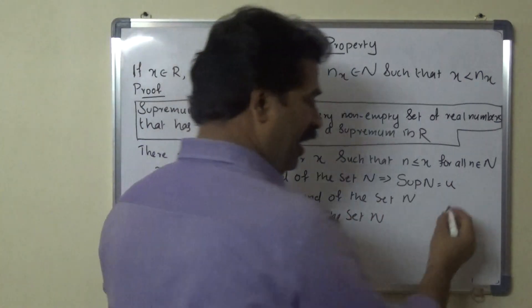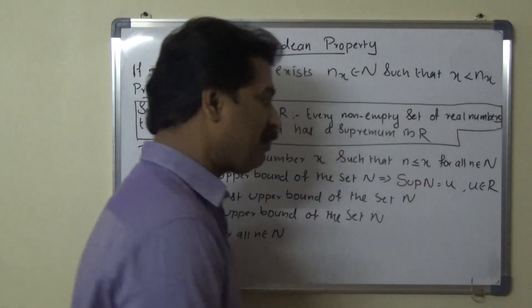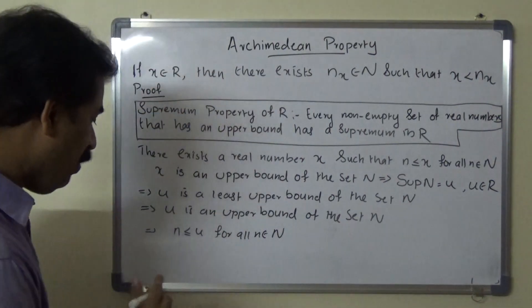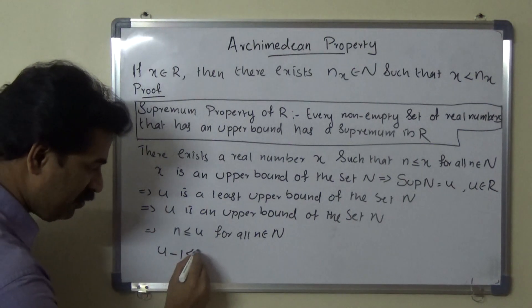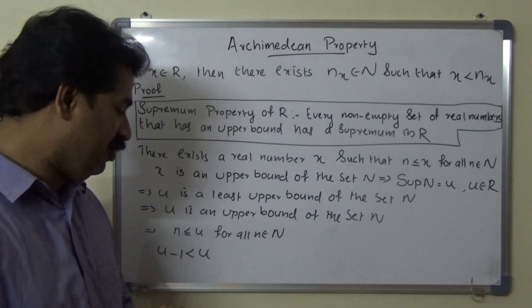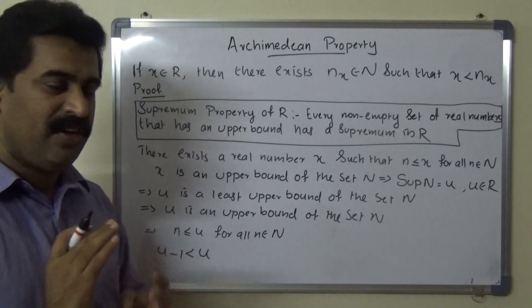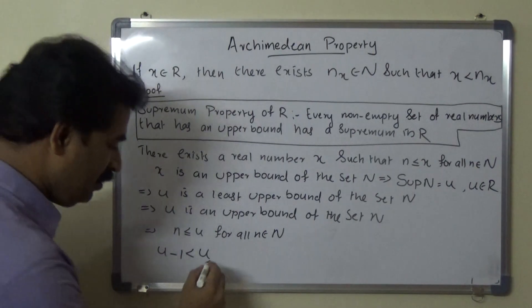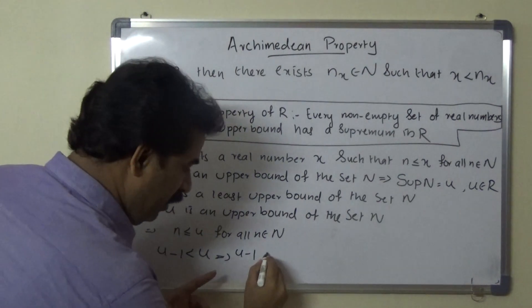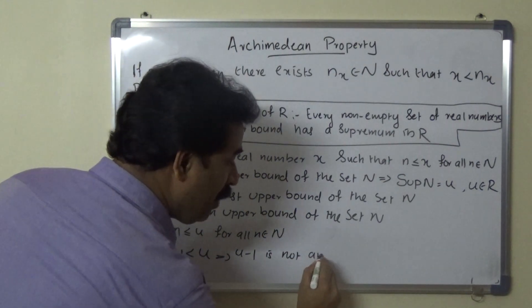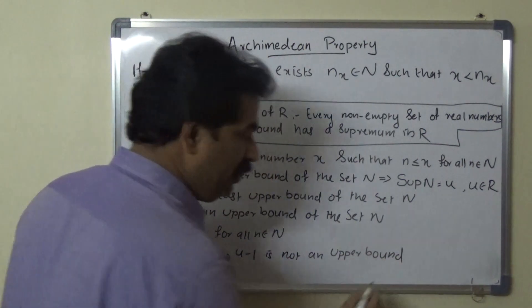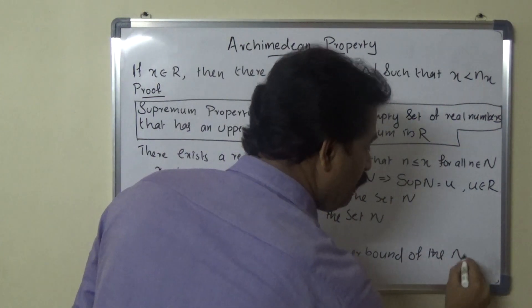Here u is a real number. Also, we have u minus 1 strictly less than u. We know that u minus 1 is strictly less than u, then we can say that u minus 1 is not an upper bound of the set capital N.